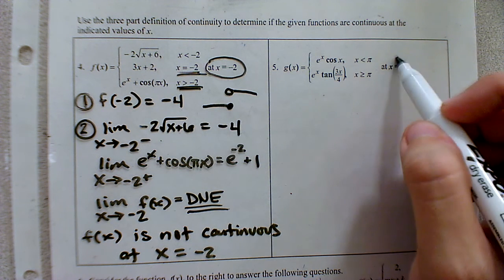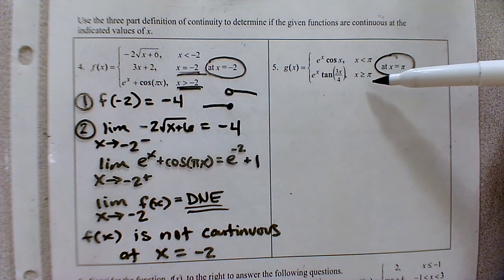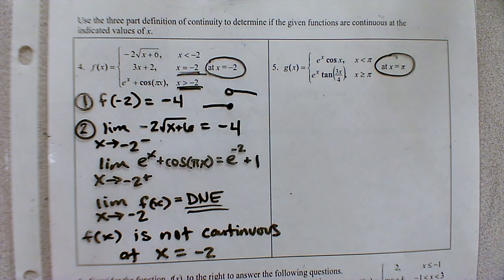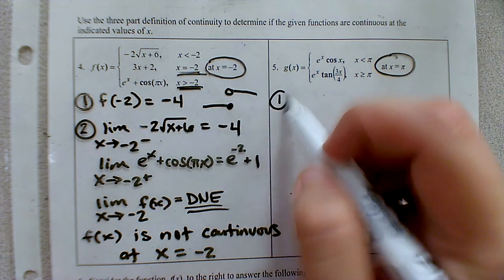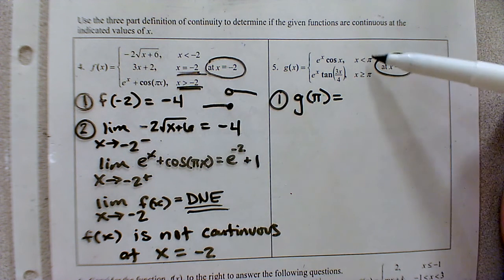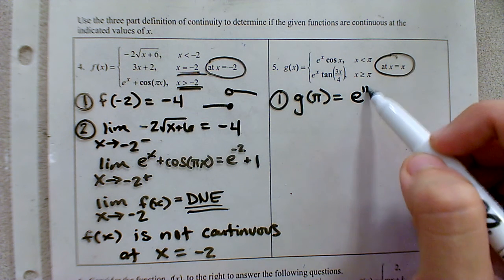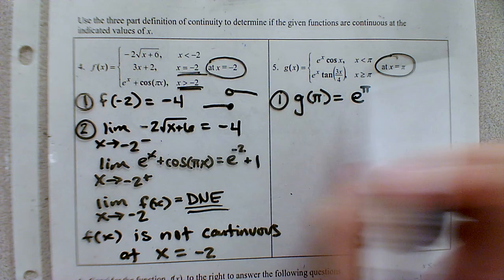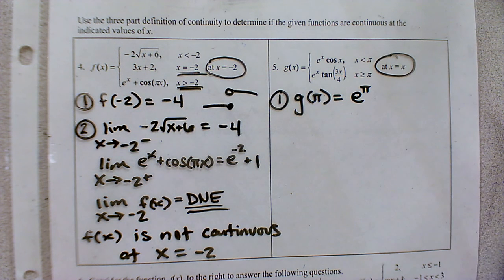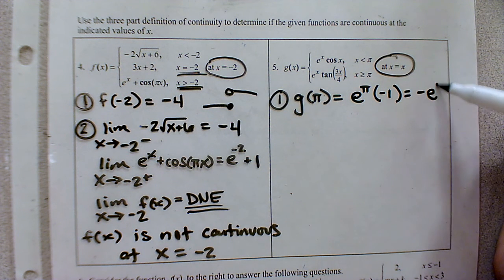Looking at number five, we test continuity at x equals pi, because based on the constraints, that's where one equation ends and the next begins. First criteria: does a point exist? Plugging in pi, we use the second equation since we can equal pi. We get e to the pi times tangent of three pi over four. Tangent at that radian location is negative one. So we get a value, and the point exists.